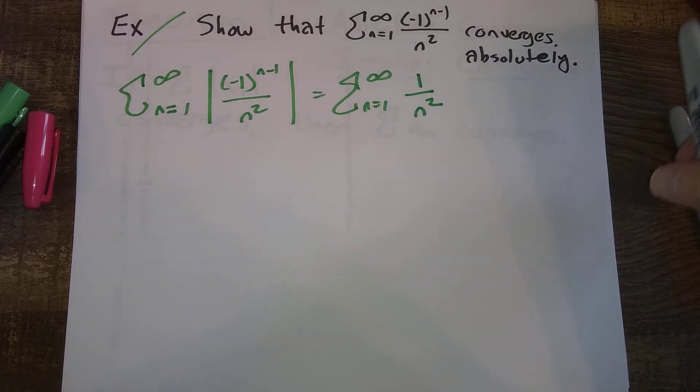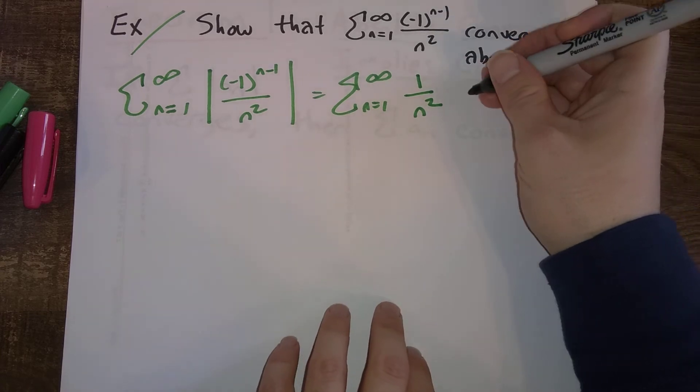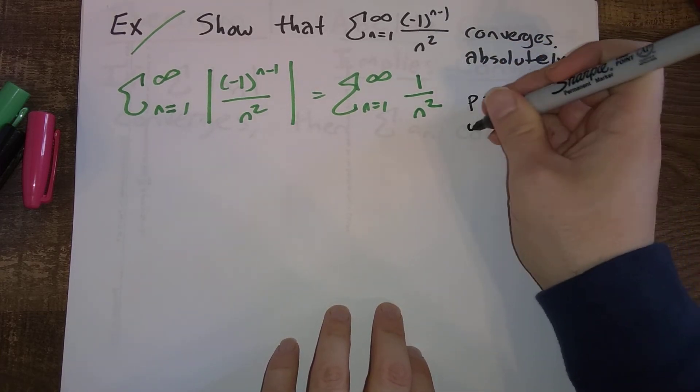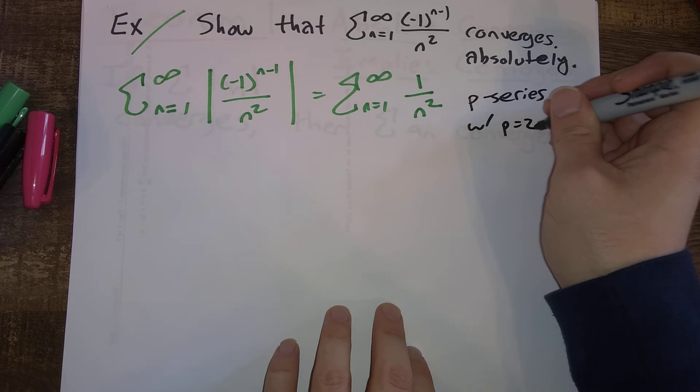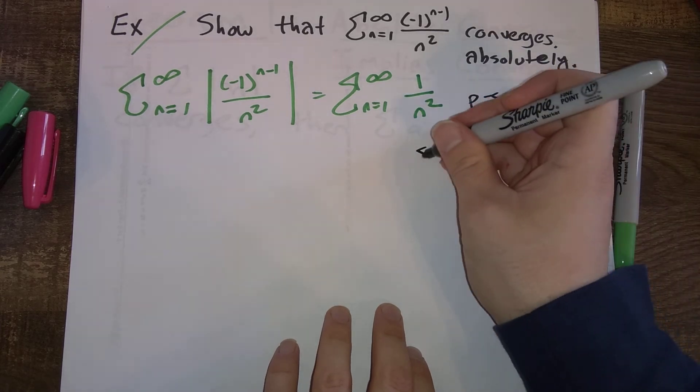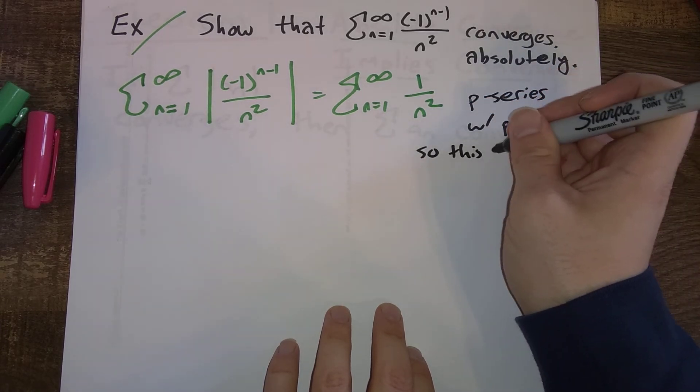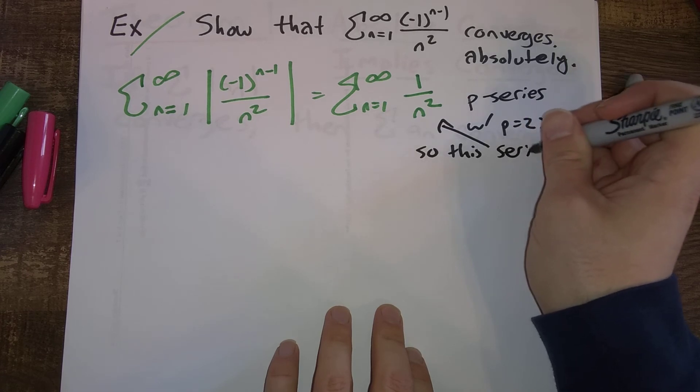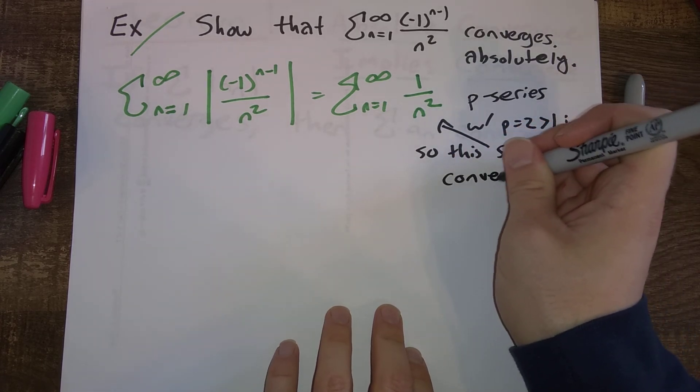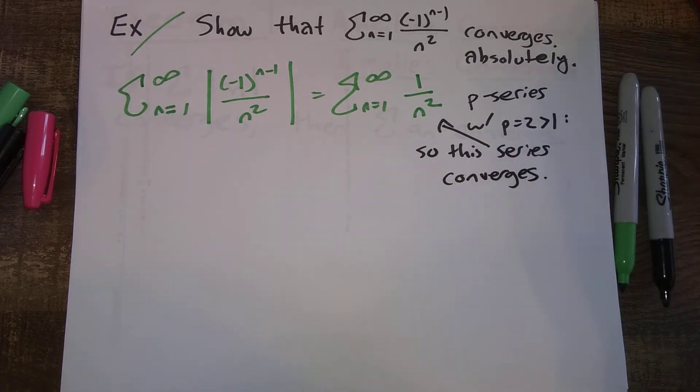And so this is something we should know from before. This is a p-series with p equals two, which is bigger than one. So this series converges.